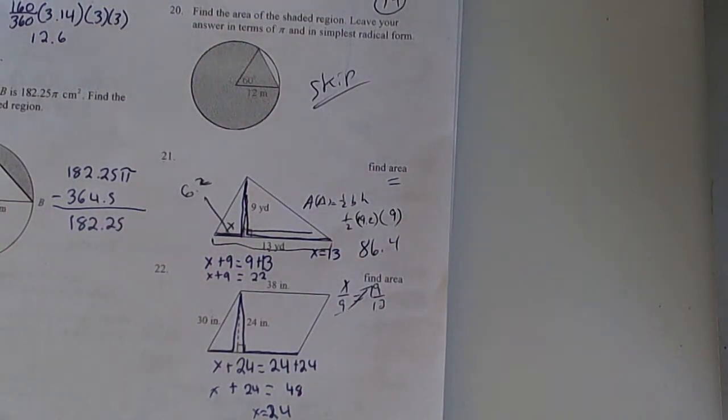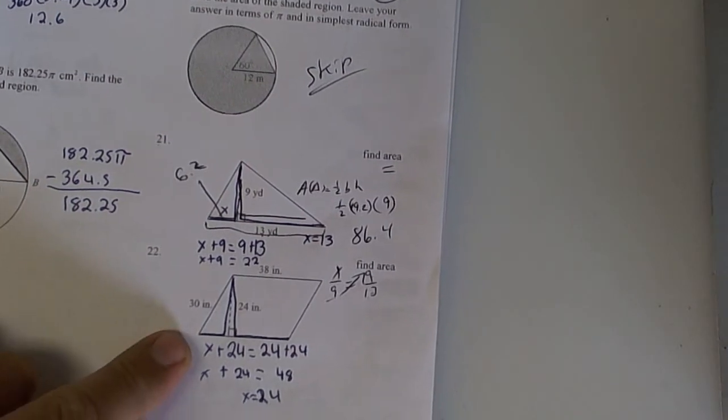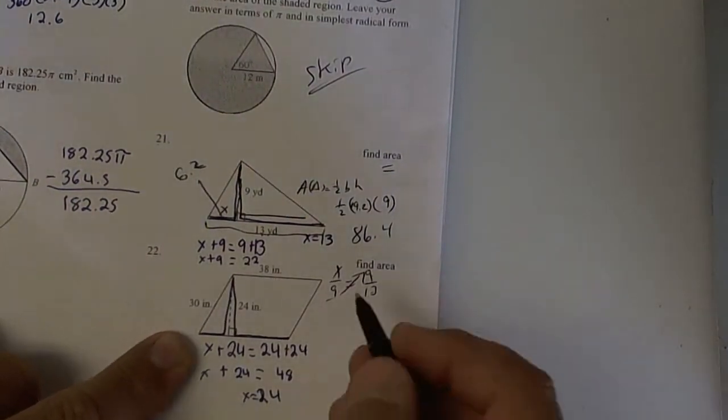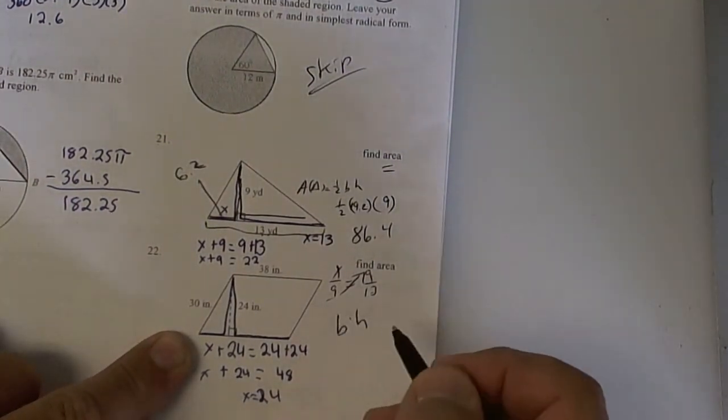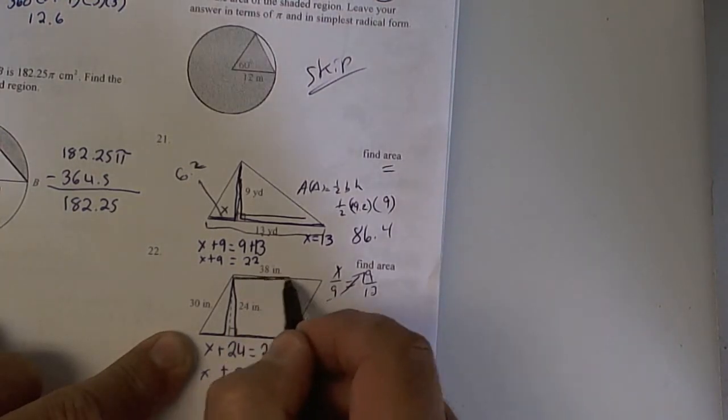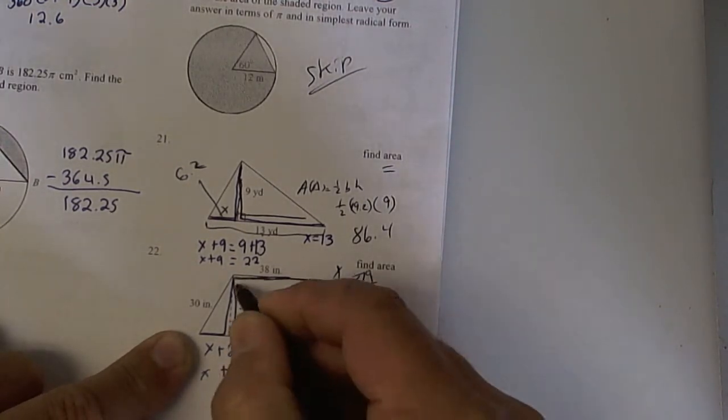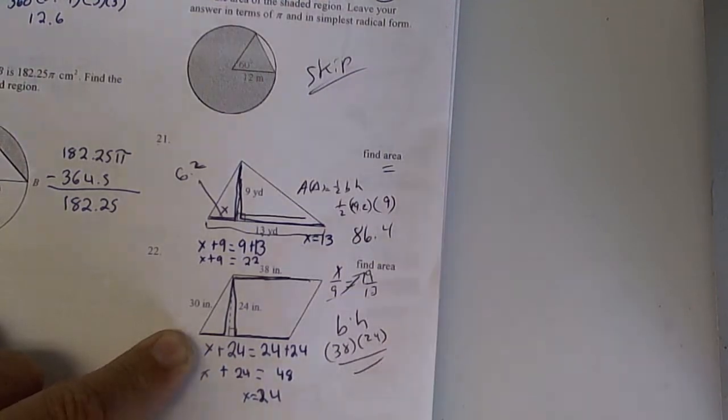This one right here, you didn't have to do the track method. It's just base times height. It's a parallelogram, Jake. So it's base, which is 38, times the height, which is 24. Now you shouldn't have missed that one. So you missed a few easy ones.